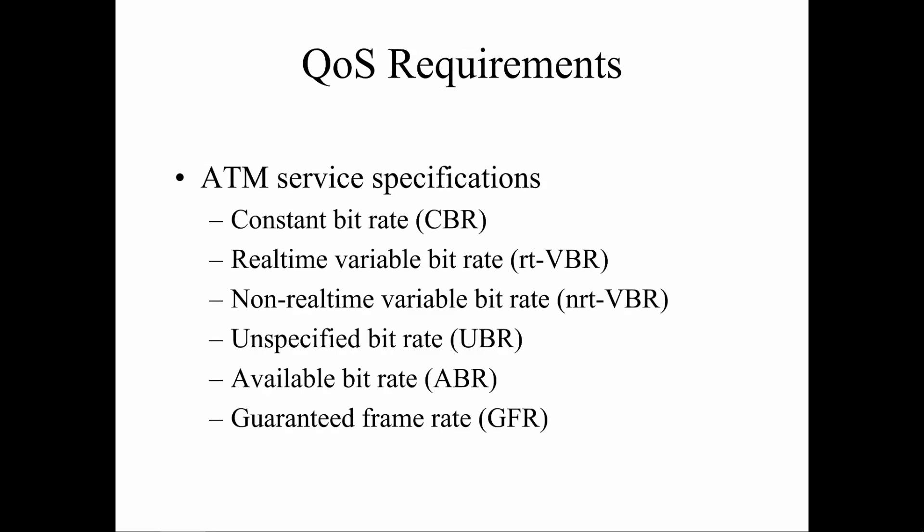QoS and CoS requirements — are we looking at a constant bit rate, a real-time bit rate, an available bit rate, a guaranteed bit rate or frame rate? All of these get brought into play when we're looking at certain services. While this particular service is more looking at the ATM service specification, these can still apply to other services — real-time versus non-real-time, constant versus guaranteed versus availability. We have to understand the flow of traffic in our network so that we can understand what is our constant bit rate per day, per time area, during peak time versus non-peak time.